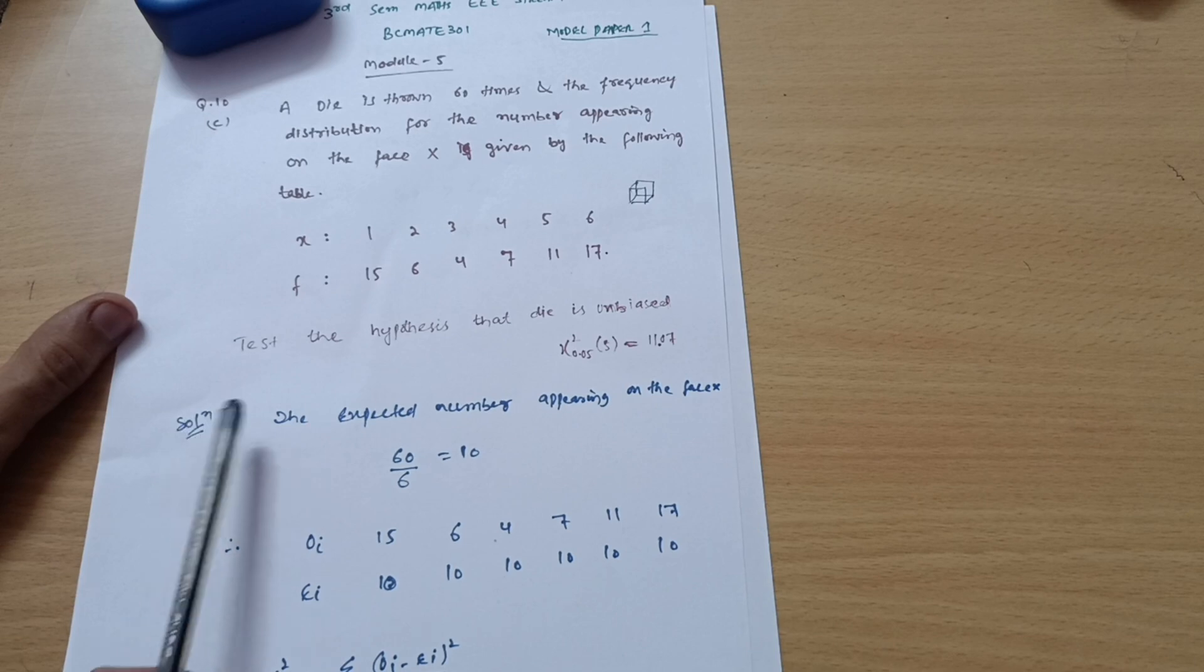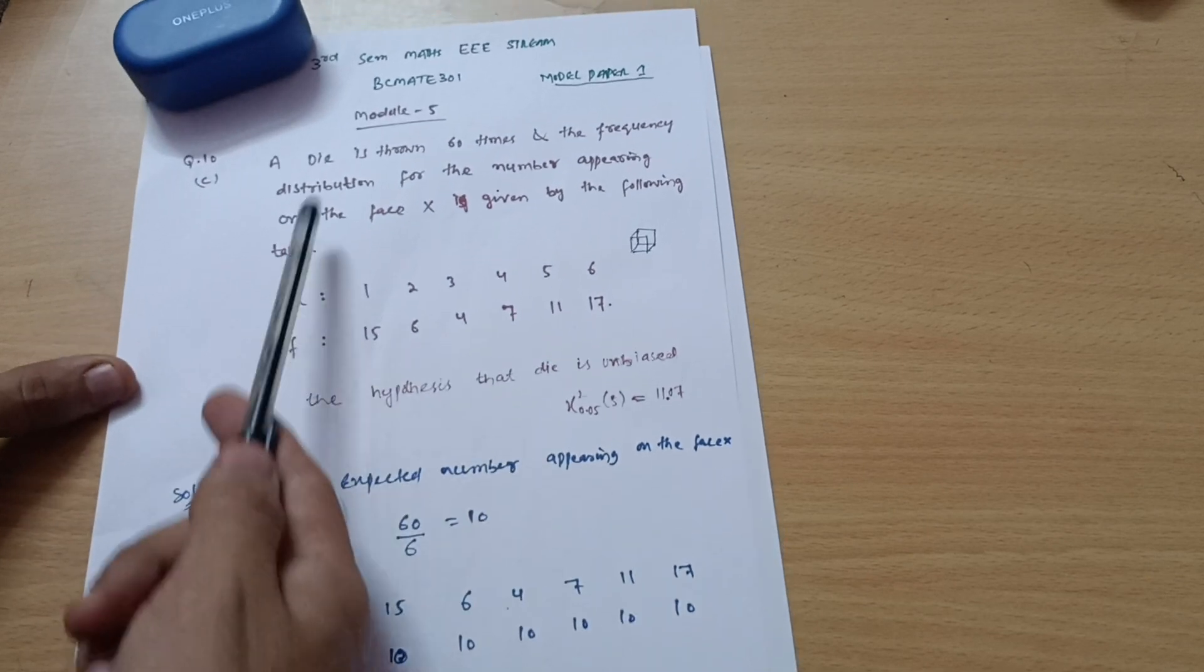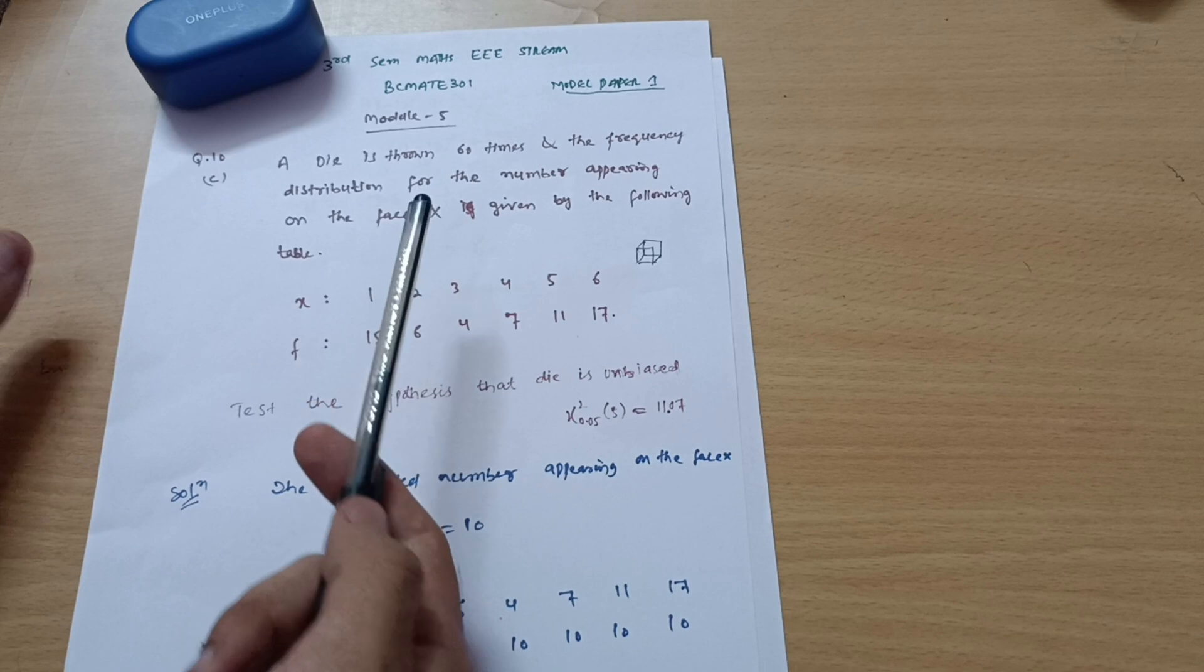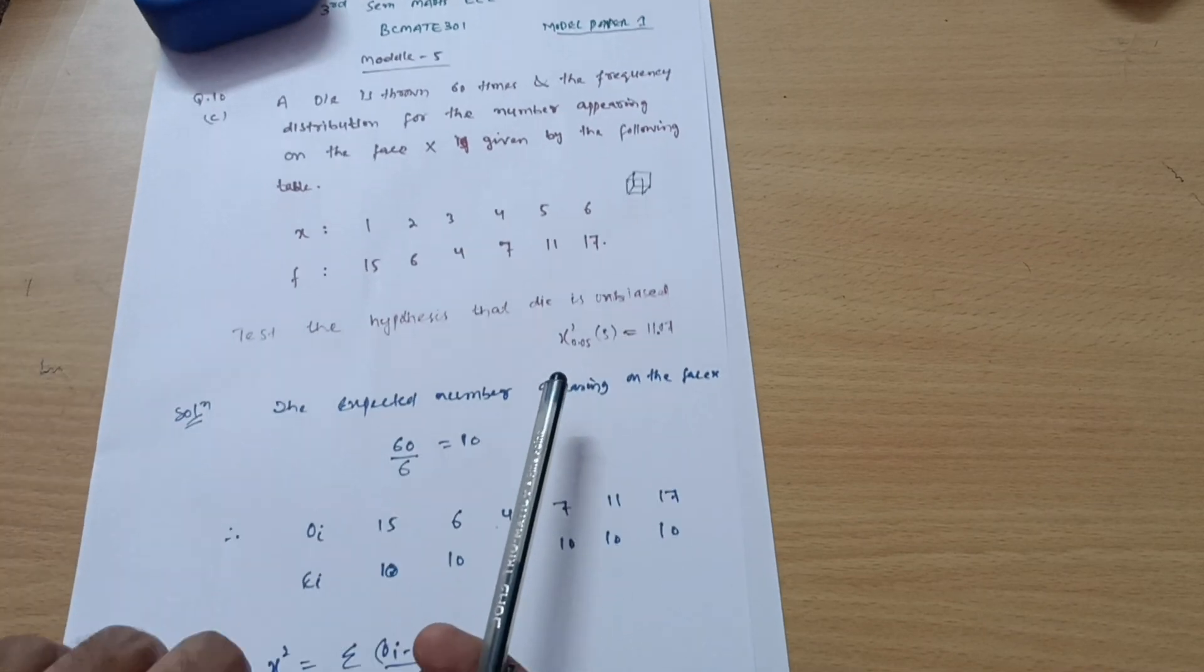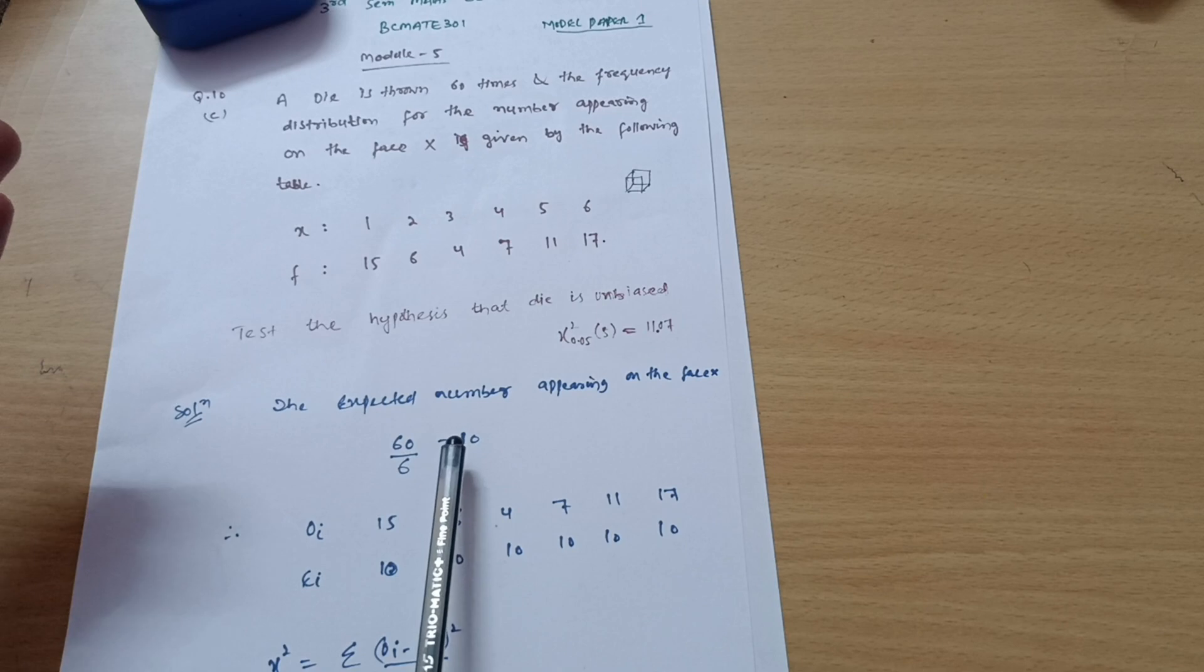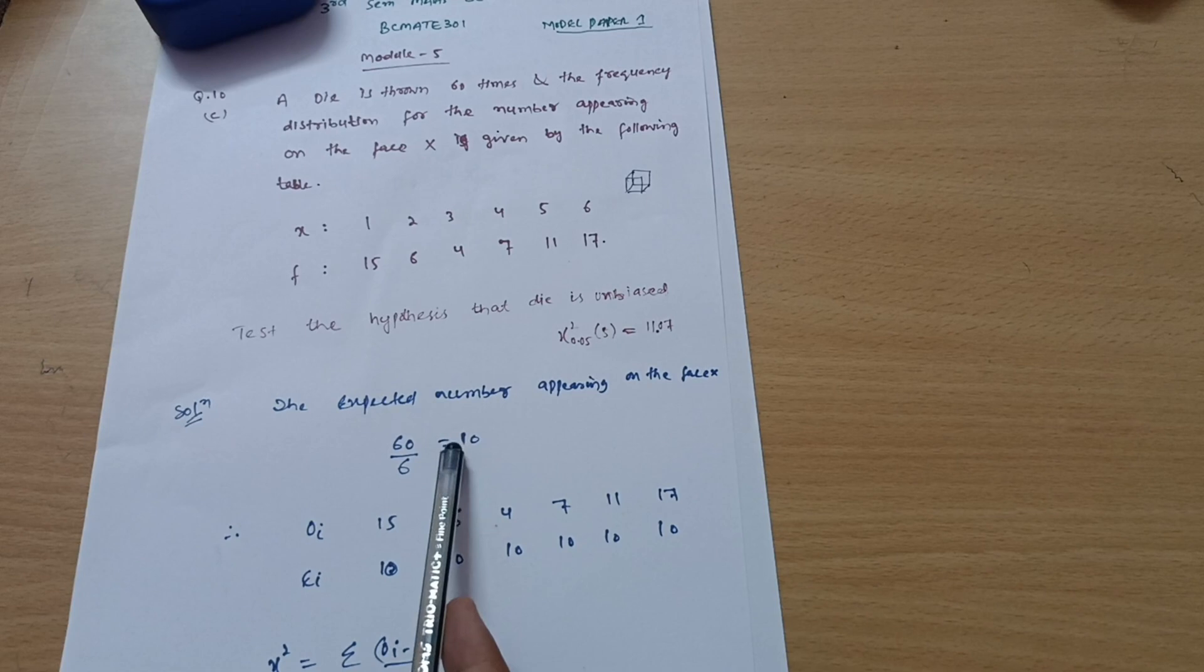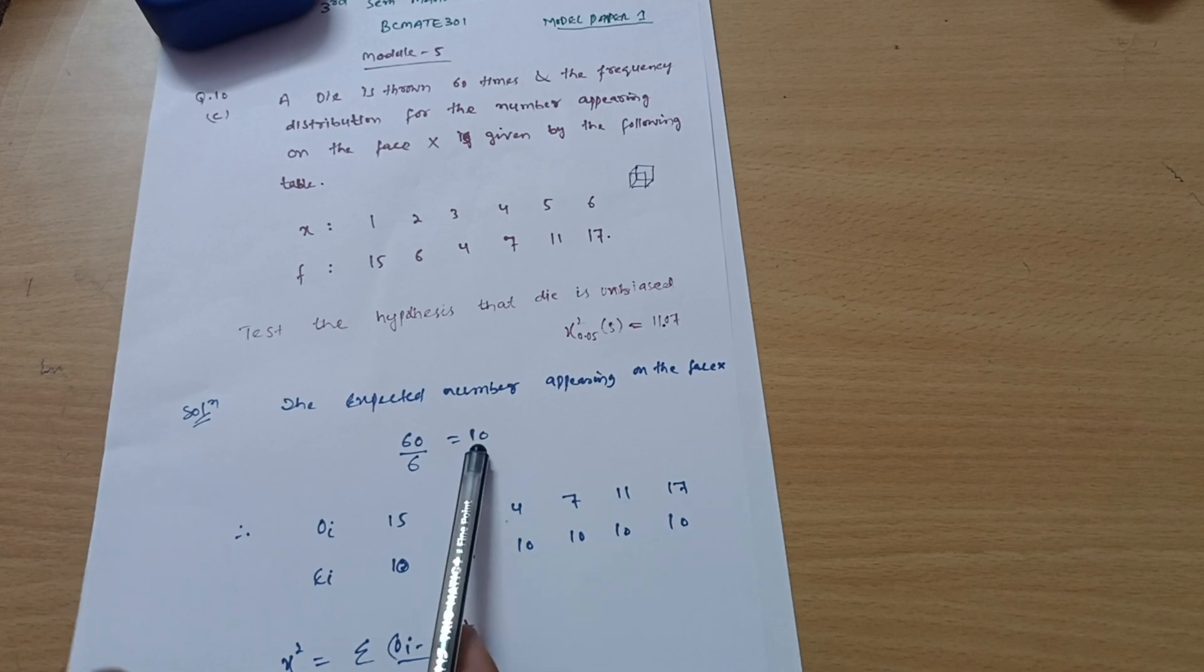While writing down the solution, first of all we are calculating the expected number, denoted by Ei. Expected number, how are we going to calculate? See here in the question, it is mentioned a die is thrown 60 times. When you throw a die 60 times, what is the possibility of each face getting? 60 upon 6, 6 is the number of faces, 60 times you are throwing a die. There will be 10 possibility for each face. Each face will appear 10 times.